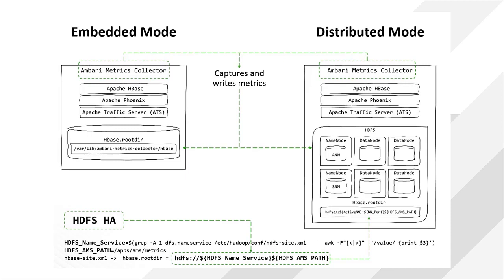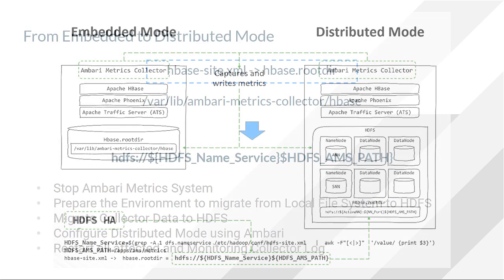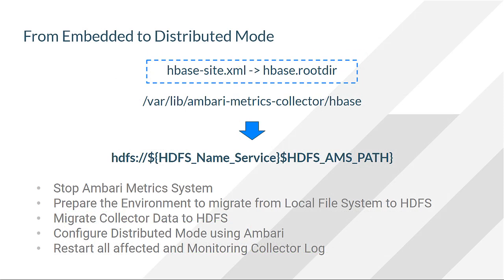For this video, our cluster is configured for a highly available name node, so we are going to set the HBase root directory value to use the HDFS name service instead of the name node host name. We will migrate existing data from the local store to HDFS prior to switching to distributed mode. To switch the Metrics Collector from embedded mode to distributed mode, we will update the Metrics service operation mode and the location where the metrics are being stored.